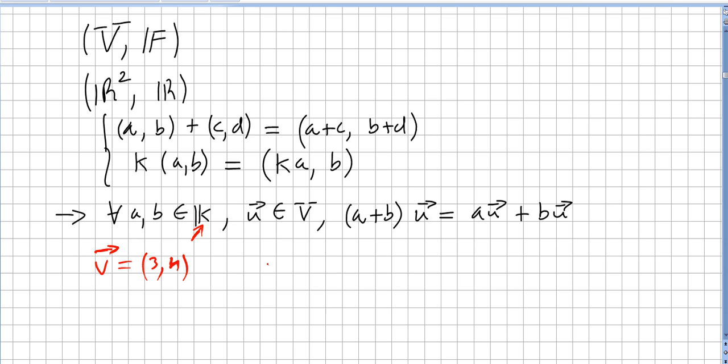Now we pick two scalars. Let us say r equals 1 and s equals 2. So vector (3,4) and these are scalars 1 and 2.